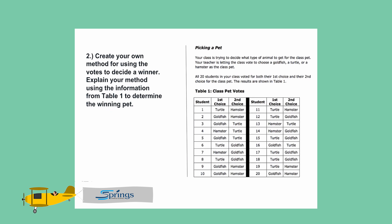Let's take a look at question number two. It reads: create your own method for using the votes to decide a winner. Explain your method using the information from table one to determine the winning pet. The first thing I see is that it's asking me to explain, which means I'll solve it in whichever way I choose. We can create our own method, but then we need to explain our method using numbers and words.